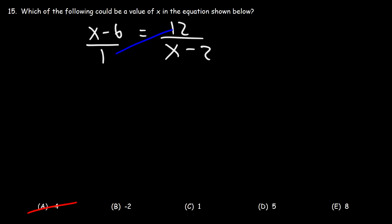So we're going to have 1 times 12, which is 12. And then we're going to multiply x minus 6 by x minus 2.